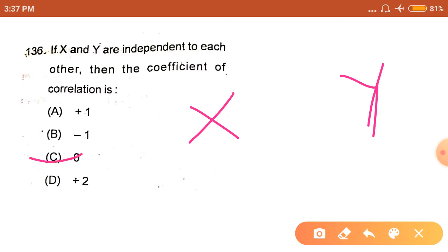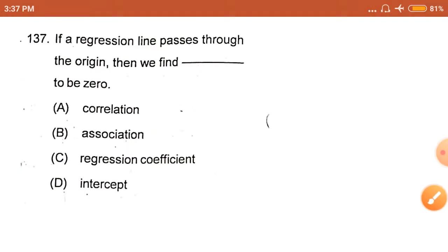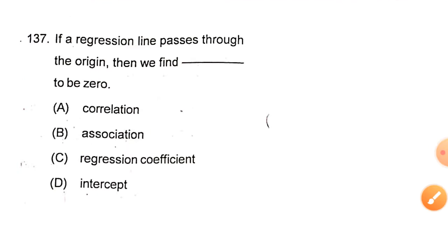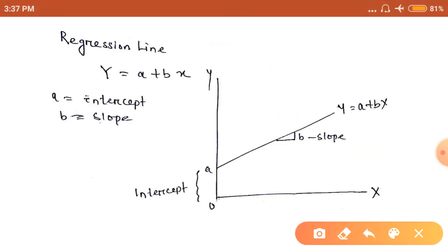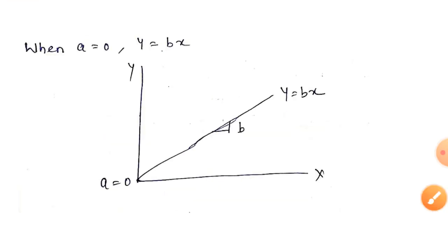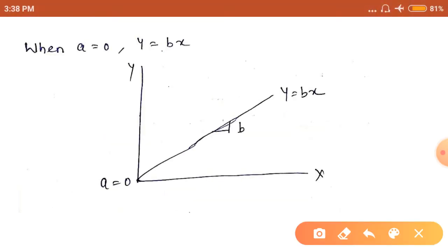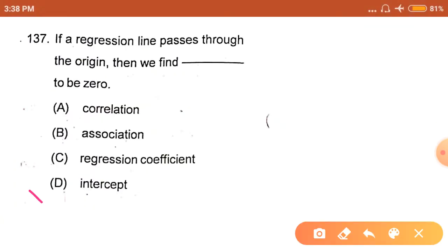If a regression line passes through the origin, then we find what to be zero? When a regression line passes through the origin... This is the equation of regression line: Y equals A plus BX. Here A is the intercept and B is the slope. When it passes from the origin, the intercept becomes zero. The answer is option D.